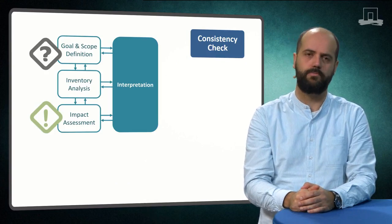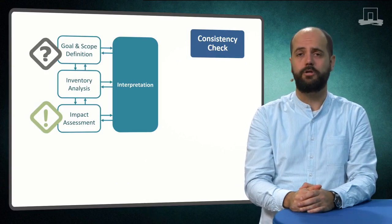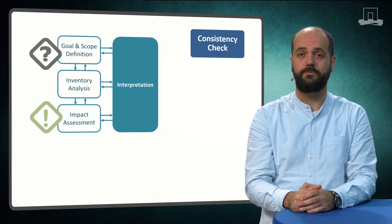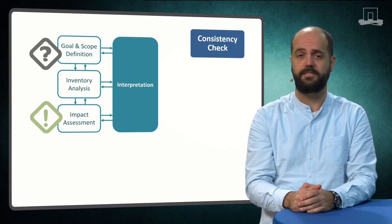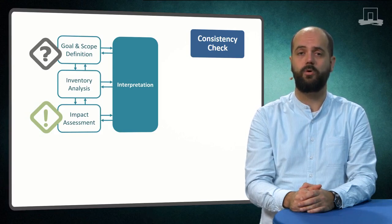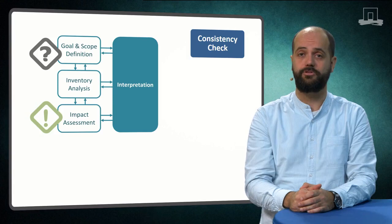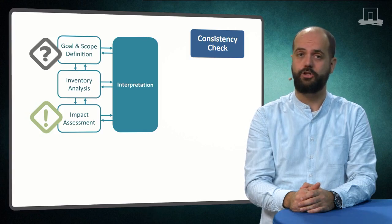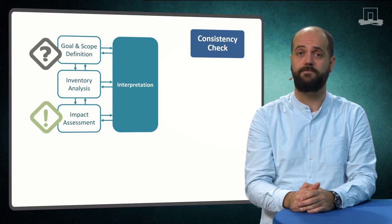Ok, so the consistency check. In terms of being consistent, we want our inventory model and our choice of impact assessment method to support our goal and scope. Our inventory model and impact assessment should allow us to answer the question we defined in the goal and scope.